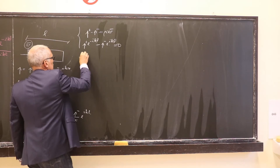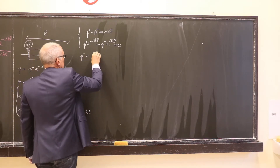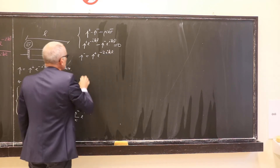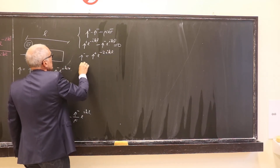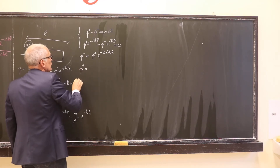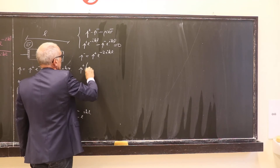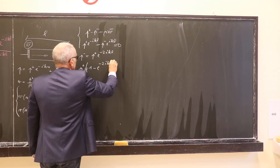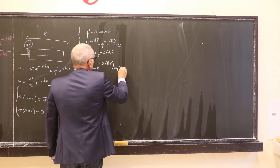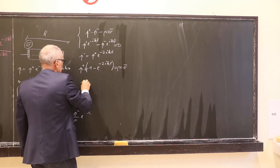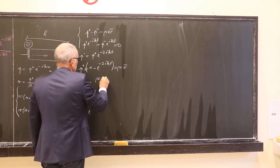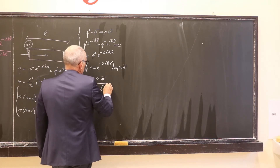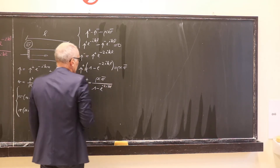The second relationship tells us that p- is equal to p+ times exponential minus 2ikl, so that p+ times (1 minus exponential minus 2ikl) is equal to ρcv̄. Therefore p+ equals ρcv̄ divided by (1 minus exponential minus 2ikl).